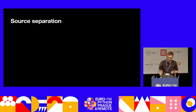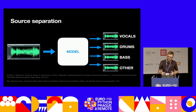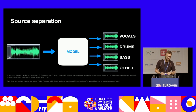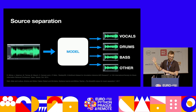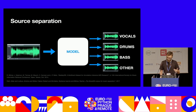Another interesting MIR task is what is known as source separation. Again, we start off with some music, we run it through a model — also, in most cases, a neural network — and we expect to kind of break down the audio into individual instruments. A couple of years ago, this was like magic, and almost every mixing or mastering engineer's dream. The most common setting is source separation into four sources: vocals, drums, bass, and other. But other options are also possible.